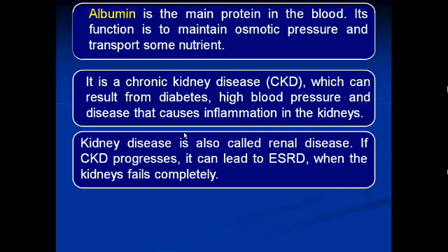Albumin is the main protein in the blood. Its function is to maintain osmotic pressure and transport nutrients from one part of the body to another. Chronic kidney disease resulting from diabetes or high blood pressure, and diseases that cause inflammation in the kidney, cause increased albumin excretion. Patients with uncontrolled glycemic conditions and hypertension generally excrete albumin in their urine.